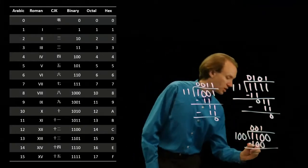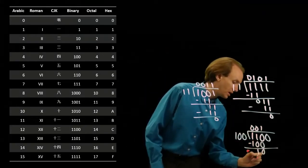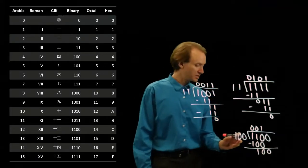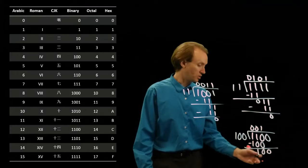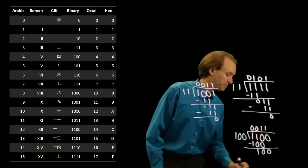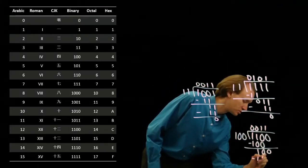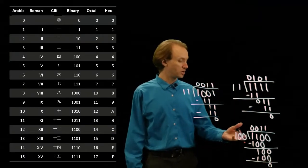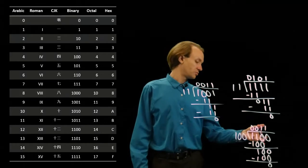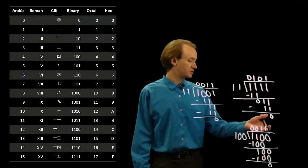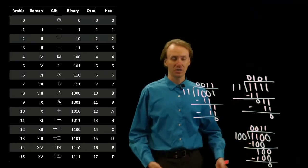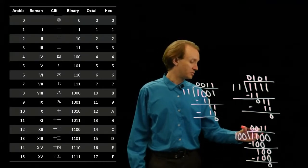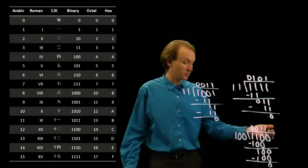So I do this subtraction. I'm left with 10. Then I pull down the next bit. And I say that 100 goes into 100 one time. So I'll subtract the 100. I'm left with 0. And I can say that 100 goes into 1100 exactly 11 times in binary. Or 4 divides into 12 exactly 3 times in decimal.